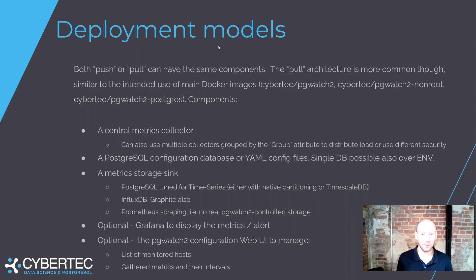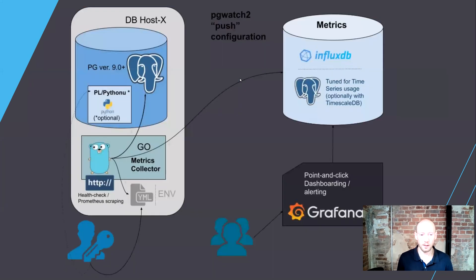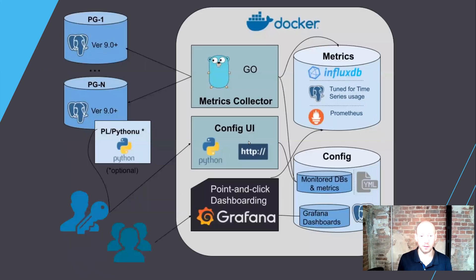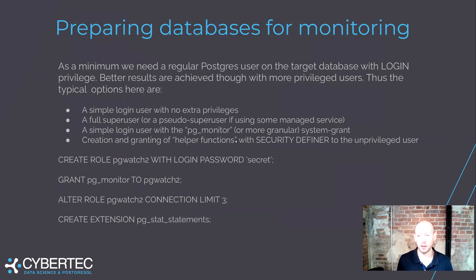A couple of words about the deployment models. We've got two main models: the pull model, where we connect remotely to the databases — that's how most people use PG Watch — and then we've got the push model, where we run the metrics collector, or agent, or daemon, directly on the database host and push the metrics into a metric storage database. We're going to go through both setups today on my workstation.